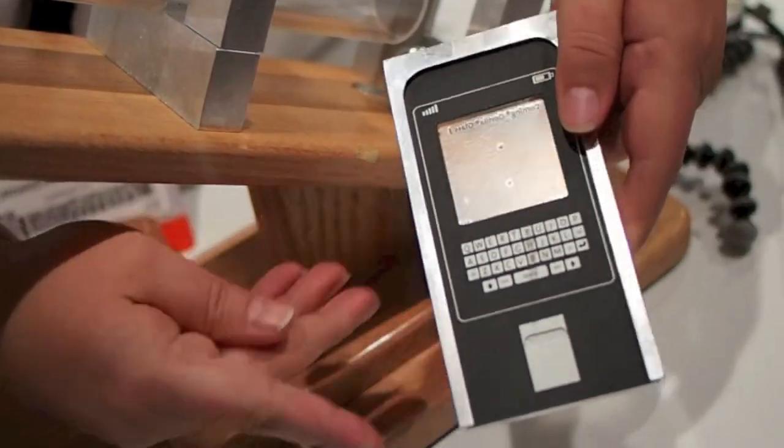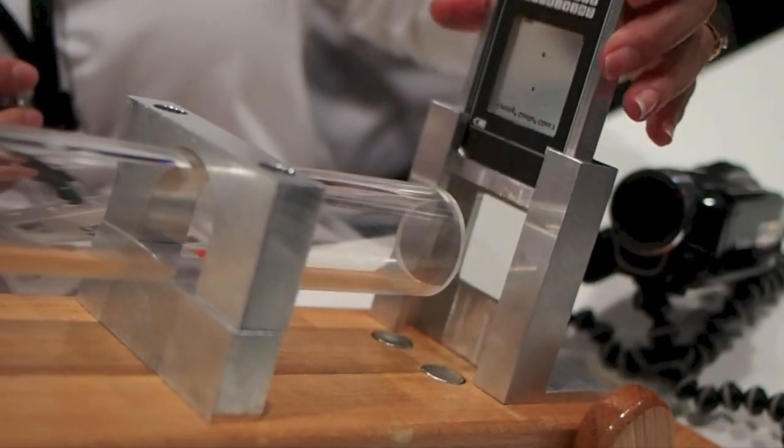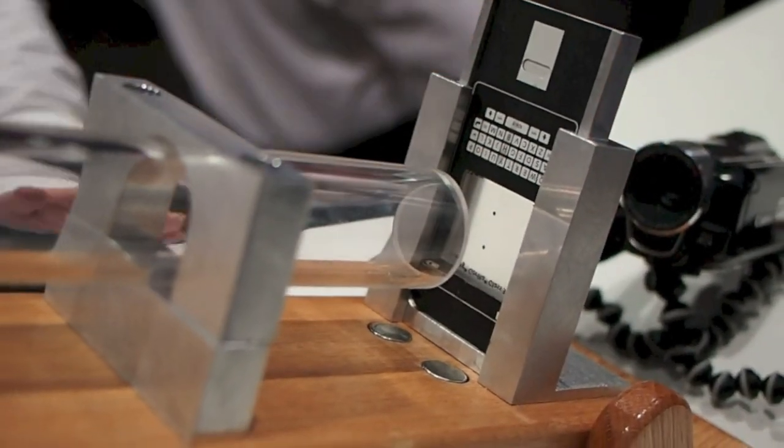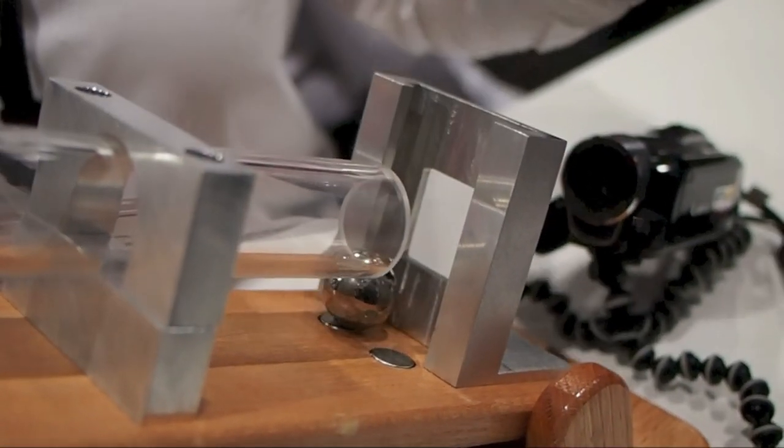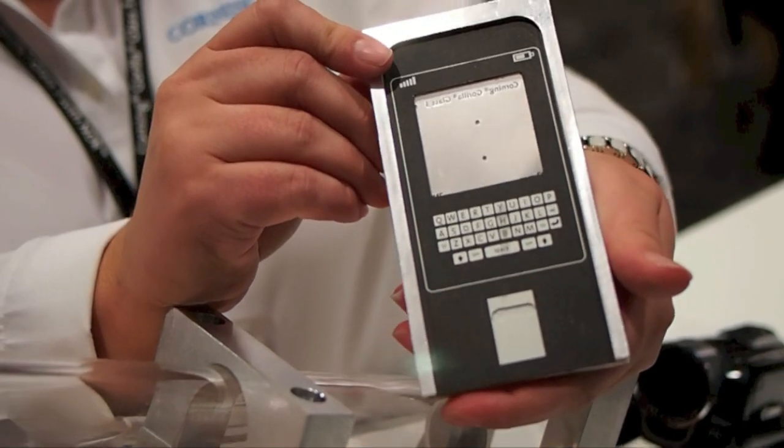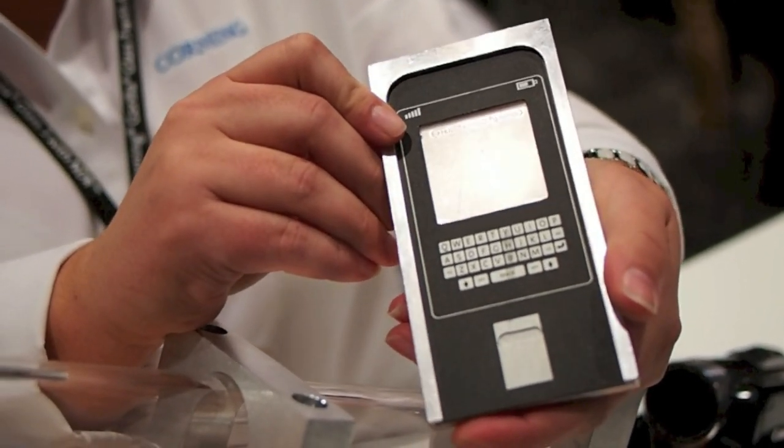So now I go back to Gorilla Glass 3. Again, scratched with a 7 newton scratch. And I pull the pin. You can see we even got a couple hits there. The glass still survived. And remember, this is scratched. Already previously damaged. Still survived the impact.